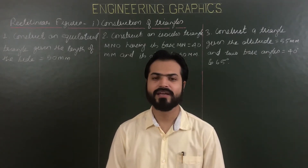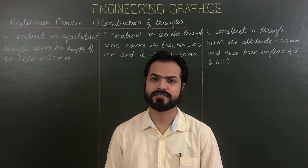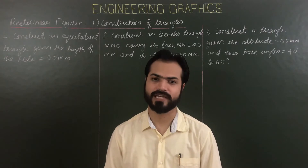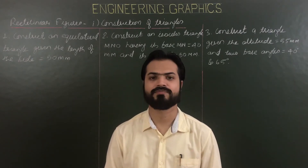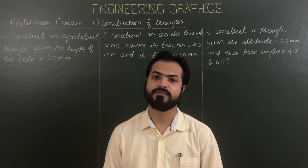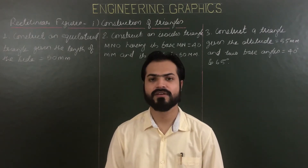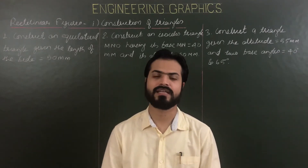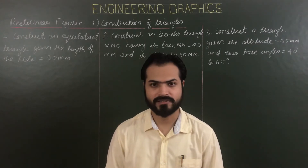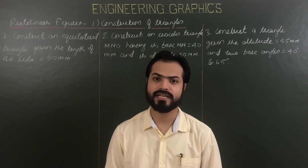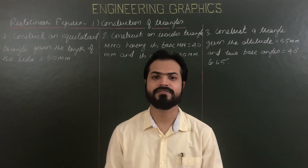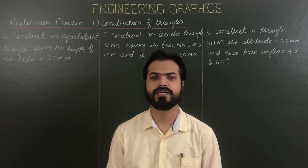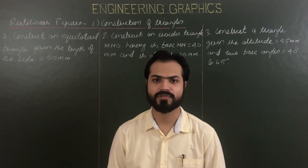Hello everyone, good morning. In today's class we are going to start construction of rectilinear figures. Under rectilinear figures we have two main topics: construction of triangles and construction of quadrilaterals. In triangles we have broadly six types in our syllabus — first, classification based on sides, and second, classification based on angles. Based on sides we have equilateral, isosceles, and scalene triangles. Based on angles we have right angle triangle, acute angle triangle, and obtuse triangle.